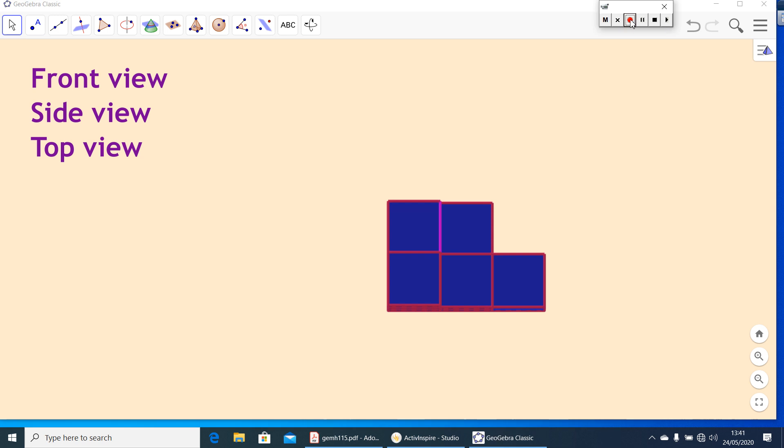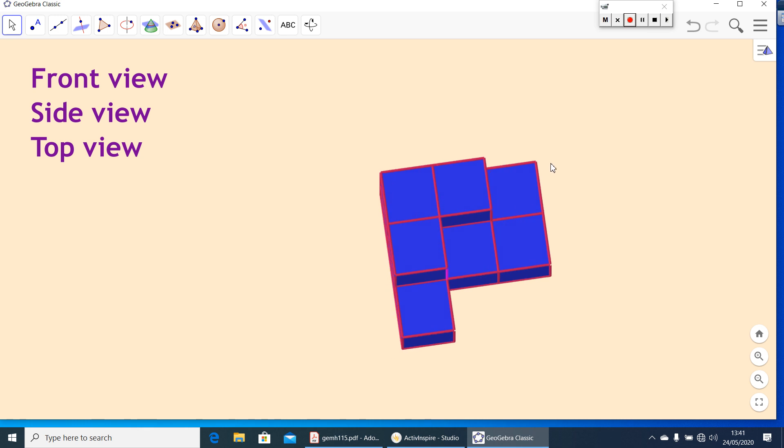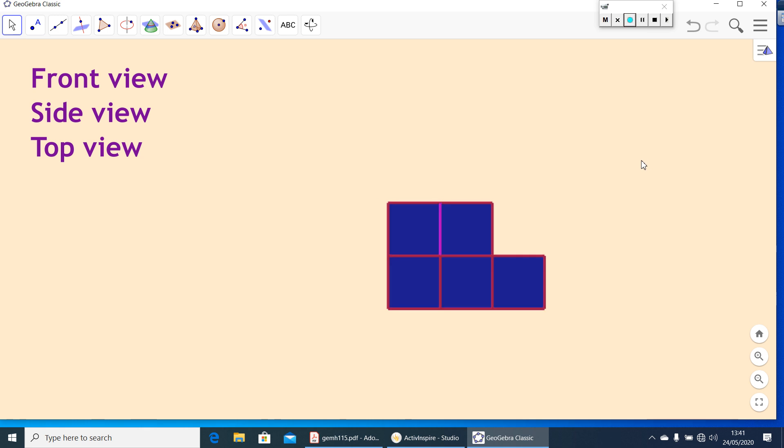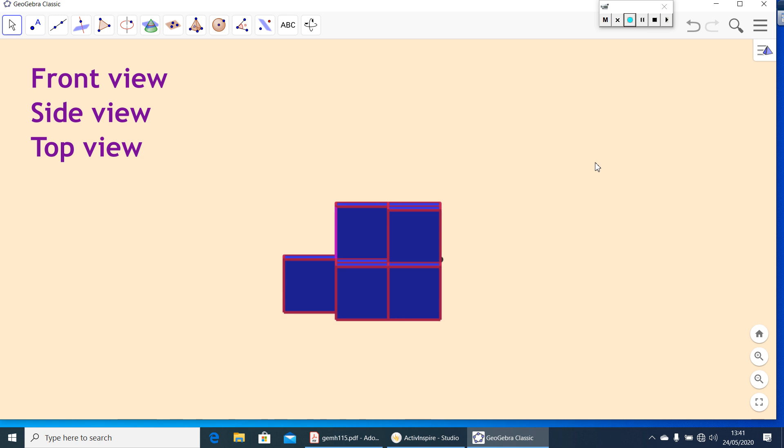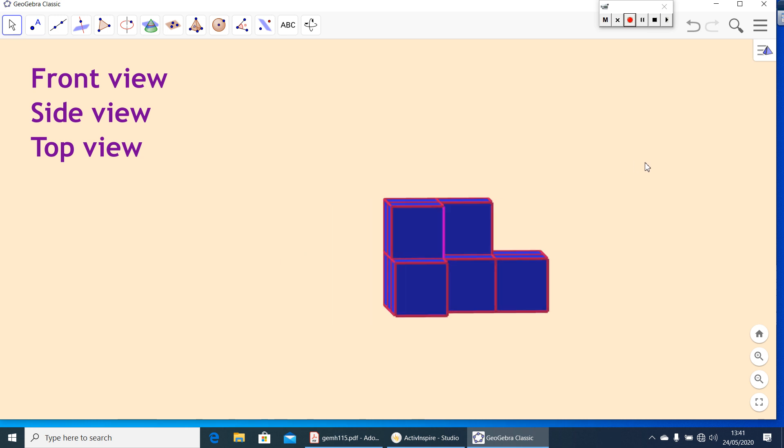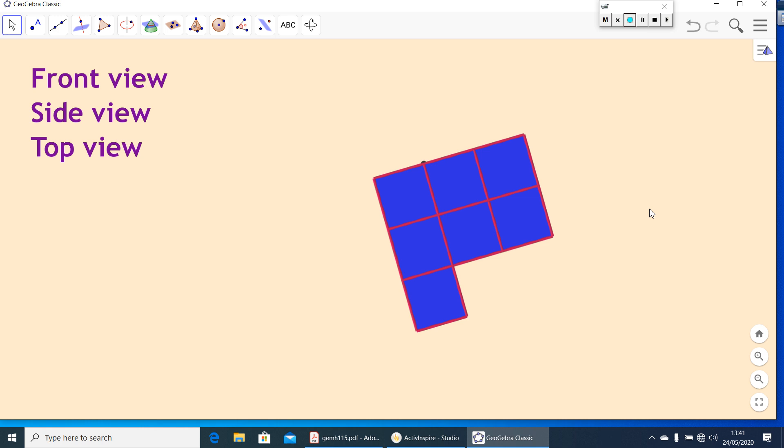Now, let's see the top view. From the top, here, this will be the top view. Here you can see 1, 2, 3, 4, 5, 6, 7 squares you can see. Then, 7 faces. So, these are the main 3 views. One is, this is front view. Then, you can get it as side view. And last, top view.